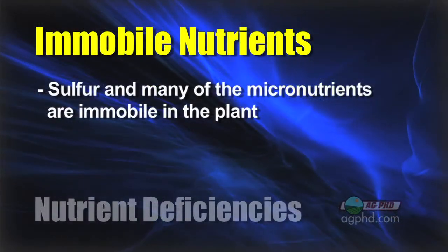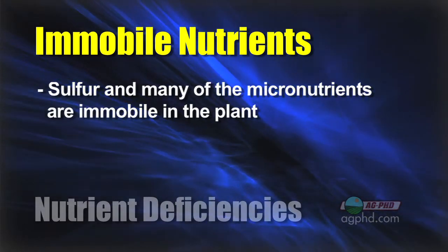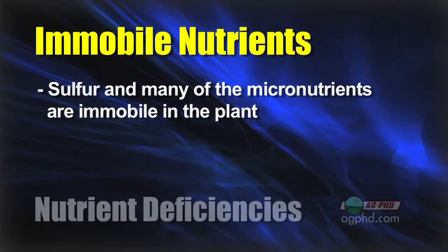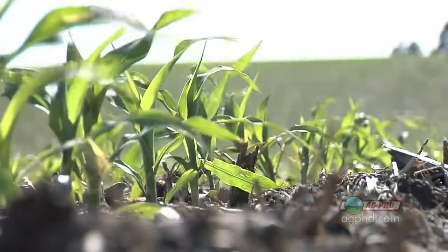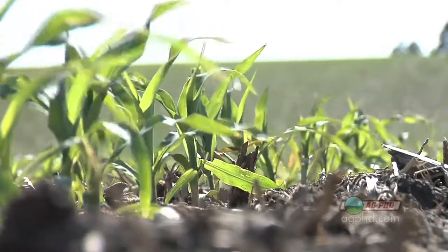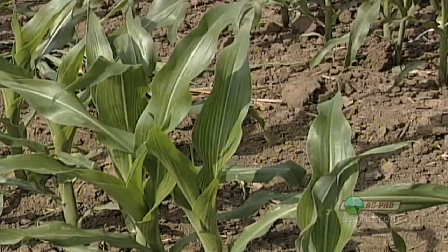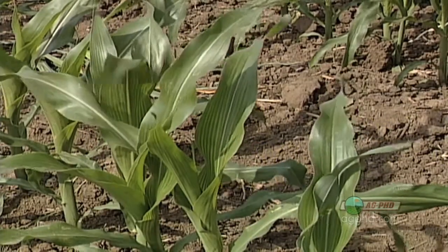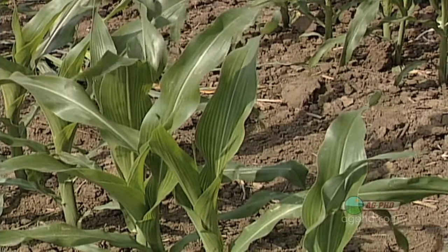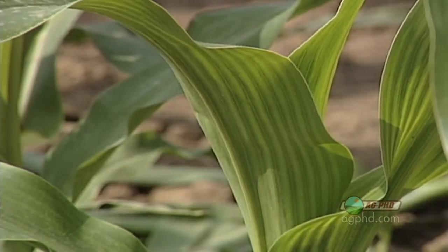Let's contrast that with nutrients that are immobile within the plant — once the plant has brought them in, they stay where they're put. Some examples would be sulfur and many of the micronutrients. When plants bring in those types of nutrients they lock in tightly in the leaves where they are brought in, but then when new growth comes out the top, if the plant cannot extract micronutrients or sulfur from the soil, those leaves are going to be short and will start showing deficiency symptoms when the problem gets bad.